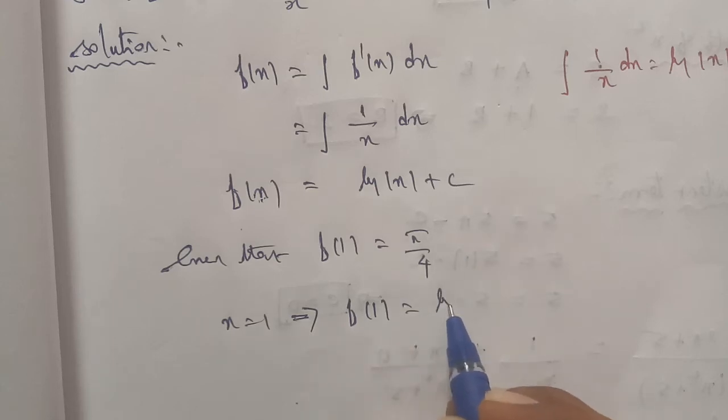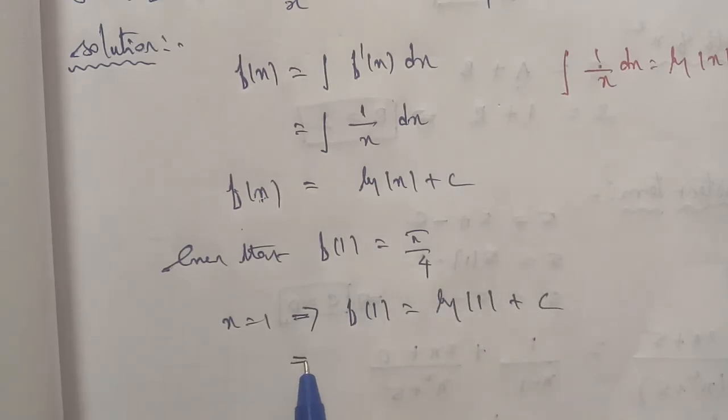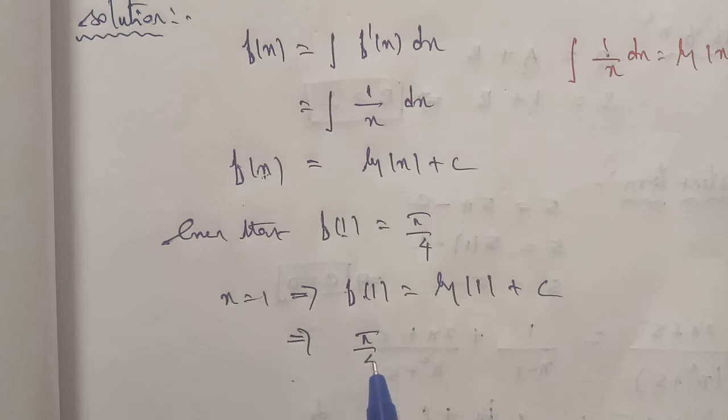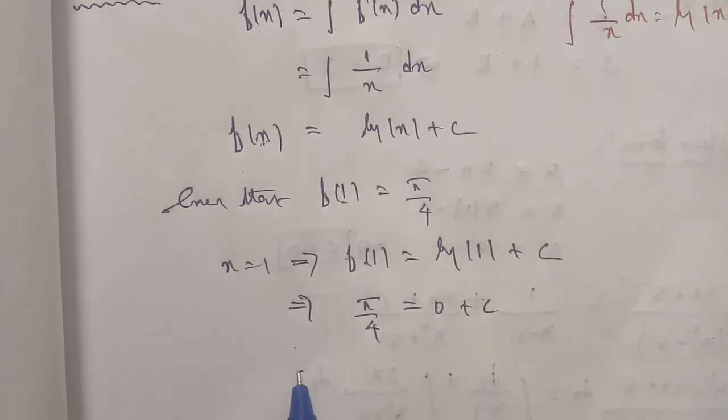f(1) equals log mod 1 plus c, and the f(1) value in the question is 5/4. So 5/4 equals log 1 plus c. The value of log 1 is 0, so 5/4 equals 0 plus c.